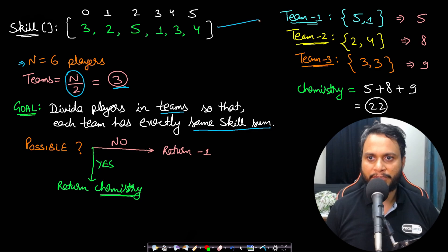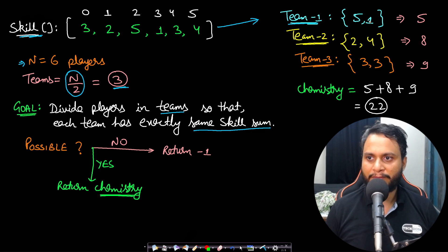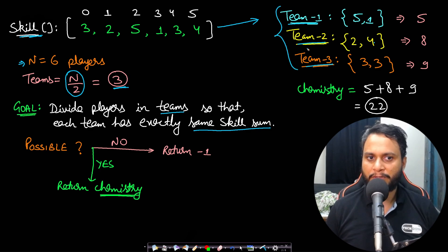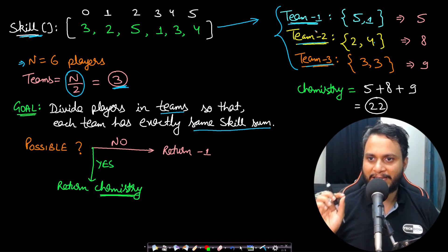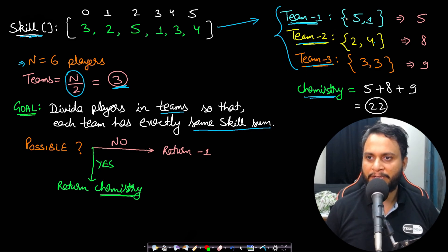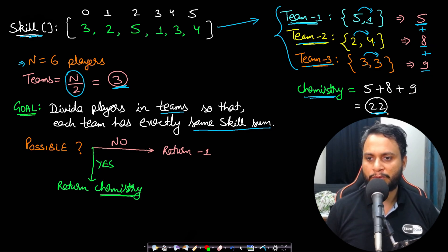If we divide into 3 teams where the sum of skills for each team must be equal: team 1 is (5, 1) with sum 6, team 2 is (2, 4) with sum 6, and team 3 is (3, 3) with sum 6. The chemistry is computed by multiplying the skills per team: 5×1 = 5, 2×4 = 8, 3×3 = 9. Adding all products gives 22 as the chemistry value.